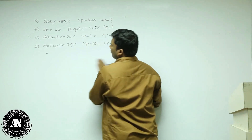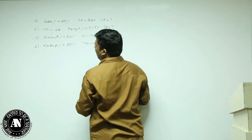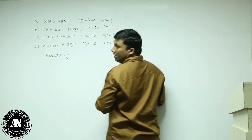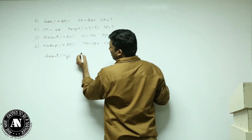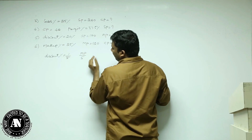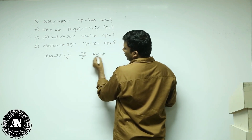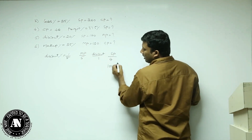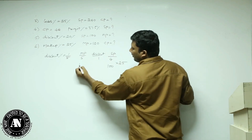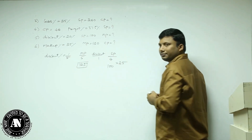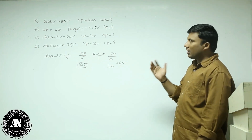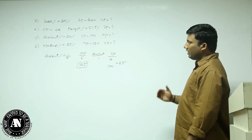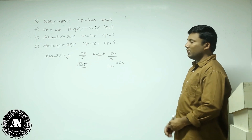Fifth: discount percentage is 20%, which is 1 by 5. Discount is always calculated on market price. So market price is 5, discount is 1, selling price is 4. But according to the question, selling price is 100 — multiply by 25. Market price is 5 times 25 = 125.